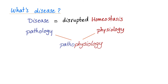But what's the definition of disease? Disease is nothing but a disrupted homeostasis. Disease is called pathology. Homeostasis is called physiology. A new field of science is born: pathophysiology.